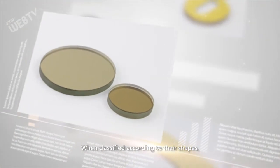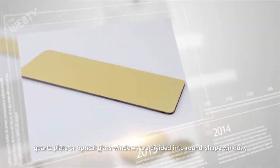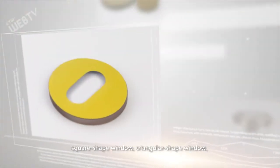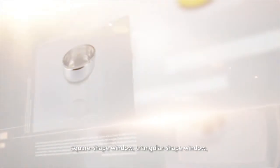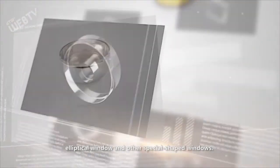When classified according to their shapes, quartz plate or optical glass windows are divided into round shape window, square shape window, triangular shape window, elliptical window, and other shaped windows.